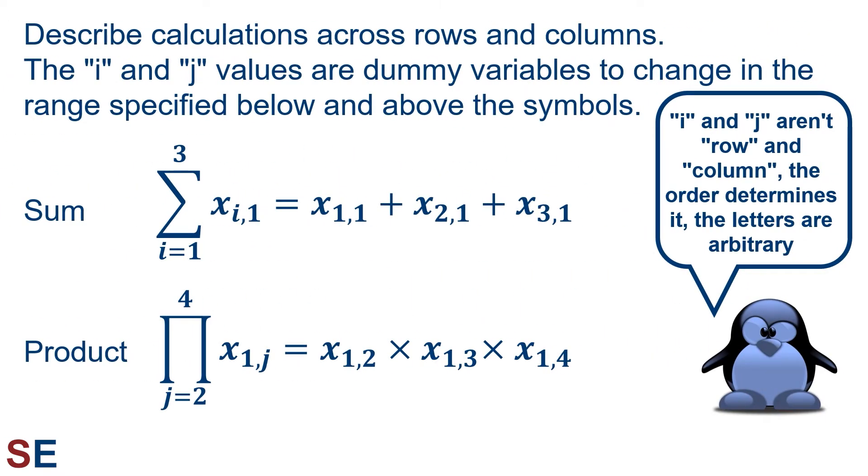We use the symbols to describe calculations across rows and columns by using text above and below the symbols just like we did in the beginning of this video. The text below the symbol tells us our starting point, and the text above the symbol tells us when to finish. Because we have rows and columns, we have to specify both of them, which we do with two letters. The letters i and j are the most commonly used, and we think of them as dummy variables that change their value when we're working with the sum or product symbol. Keep in mind that the letters i and j themselves don't always match up with row and column. It's the order that matters, where the first one is the row and the second one is the column.